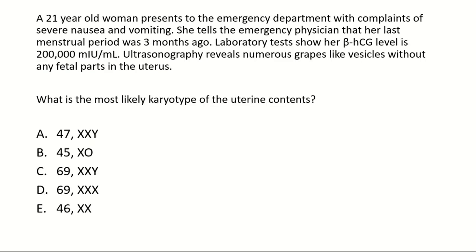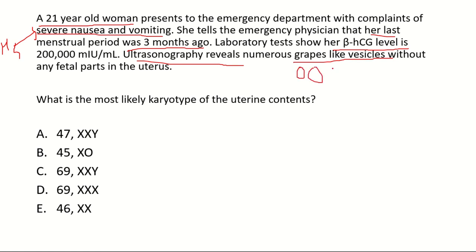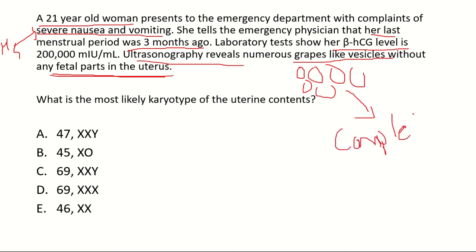Now let's discuss the opening question. A 21-year-old woman presents with severe nausea and vomiting; her last menstrual period was three months ago, suggesting hyperemesis gravidarum. Beta-hCG is around 200,000 mIU/mL. Ultrasonography reveals numerous grape-like vesicles and no fetal parts in the uterus. These features — absence of fetal parts, very high hCG, and grape-like vesicles — suggest complete mole, not partial mole, since partial mole would have some fetal parts present.